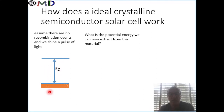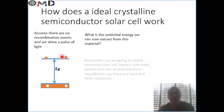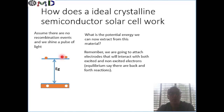So this is really an illustration of what might happen when we shine a light pulse. In this case, the charges are staying on top because we didn't allow for any recombination. So the question is what kind of voltage we can expect to derive from this material. It seems that the electron can lose the energy of the band gap, so probably this is what we can get out of this device.